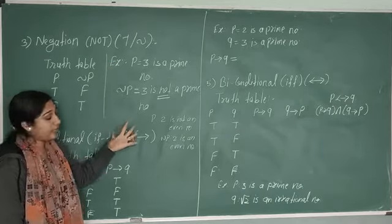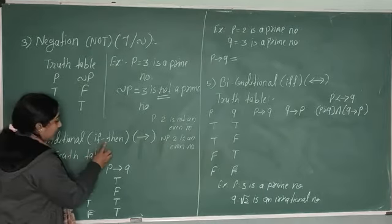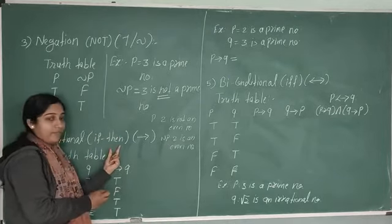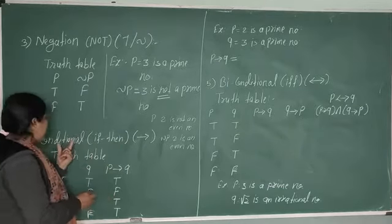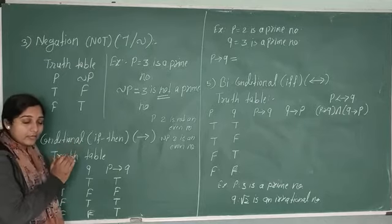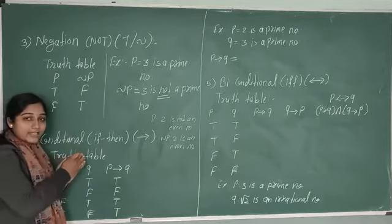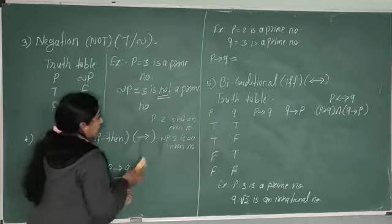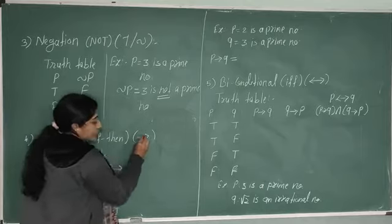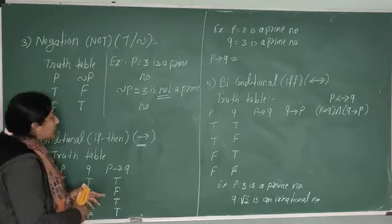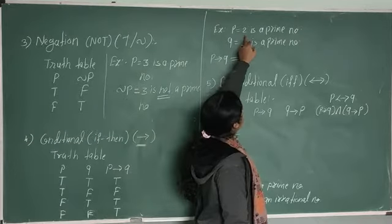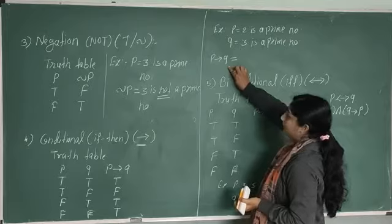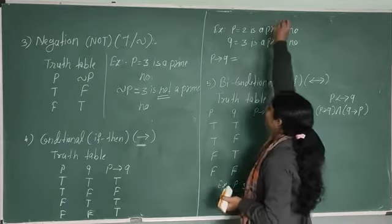Next is the conditional statement. If you want to combine two simple statements using the words 'if' and 'then,' that compound statement is called a conditional statement. The notation for a conditional is the arrow mark — P implies Q. For example, let P be '2 is a prime number' and Q be '3 is a prime number.'